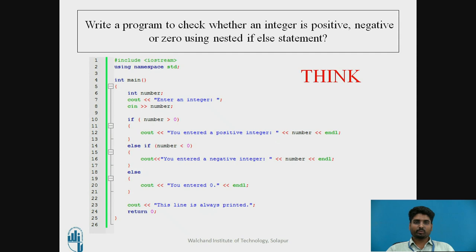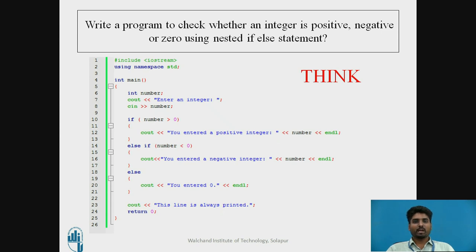I have used Code Blocks to write the program. The first lines are #include iostream and using namespace std. I have declared int main and an integer variable called number. cout asks the user to enter an integer, which is stored in number. Using nested if-else: if number is greater than 0, the output is that the number entered is positive.